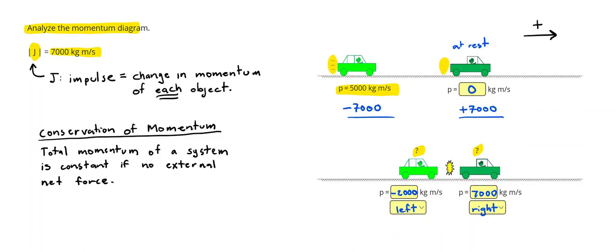Oh, actually, before we do, let's use conservation of momentum to check our answer. So conservation of momentum says the total momentum of a system is constant if there's no external net force. So what I can do, let me erase some of this highlighting. So I can say, okay, let's look at the first line. What was the total momentum on this first line? And it was 5,000. Positive 5,000.